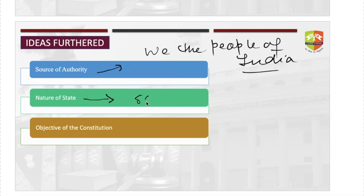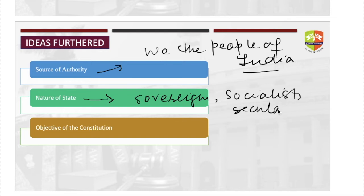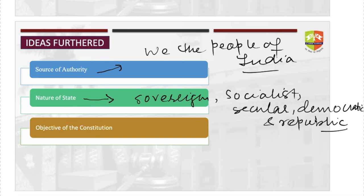The preamble also describes the nature of the state. The five pillars defining the nature of India as a state are: sovereign, socialist, secular, democratic, and republic. These are the five essential characteristics of the nature of the state on which basis India was created, as seen in the preamble.